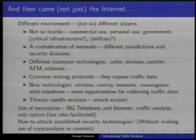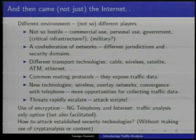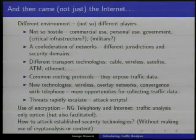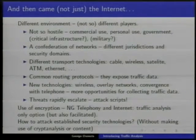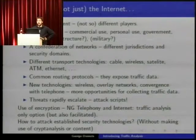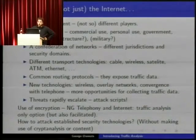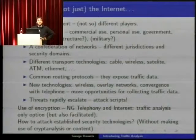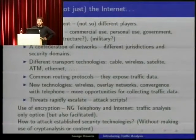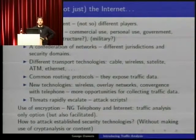But overall, if there are attacks on the internet, usually no one gets killed. It's a confederation of networks with different jurisdictions. There are lots of different transport technologies, so we can't really think that there is just one technology. What defines the internet is a set of common routing protocols — the IP protocols. And what is interesting about them, when it comes to traffic analysis, is that there is no protection of the routing information.